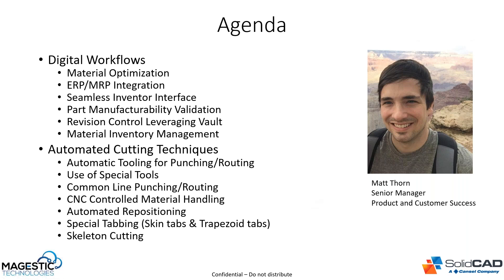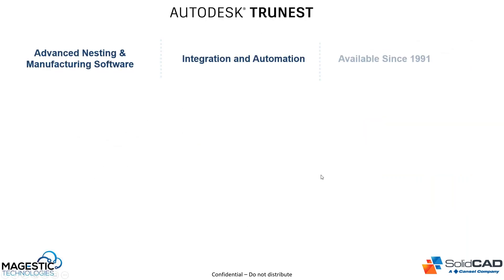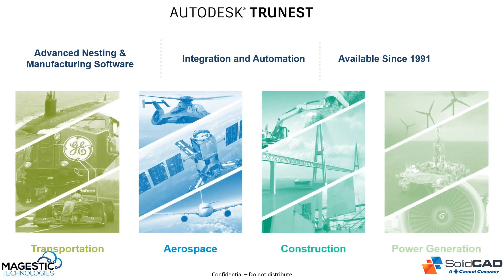I'm Matt Thorne, senior manager at Majestic Technologies in charge of product and customer success. Before we dive in, a bit of background on TruNest for those who weren't with us last time. TruNest covers industries and materials for transportation, aerospace, construction, and wind energy power generation. We've been around since 1991, specializing in integration and automation of production in our customers' facilities.